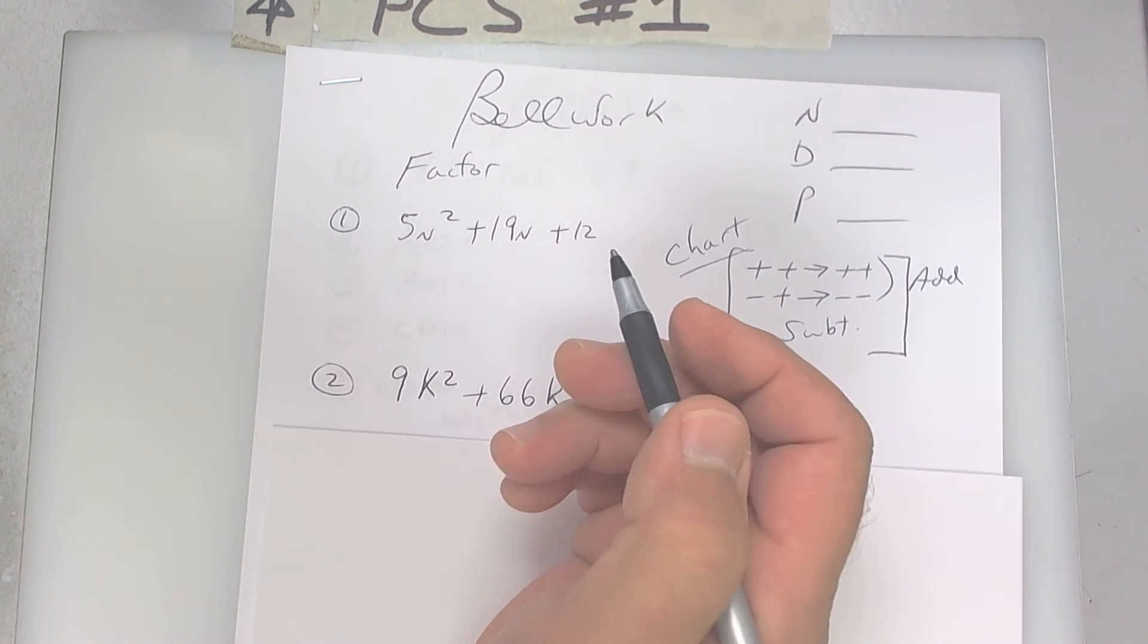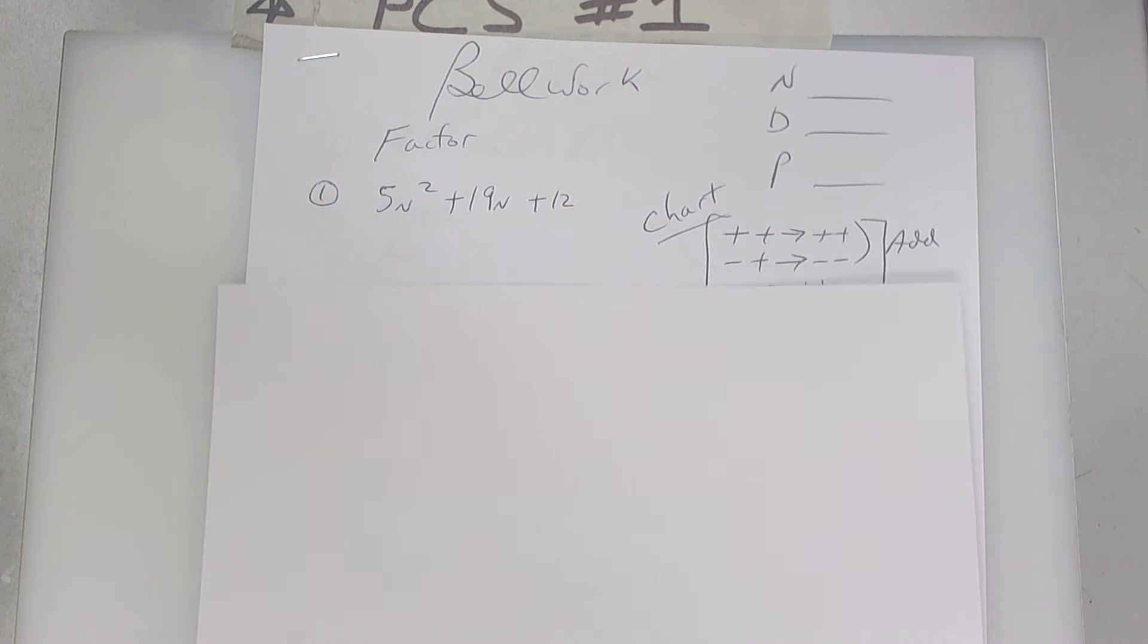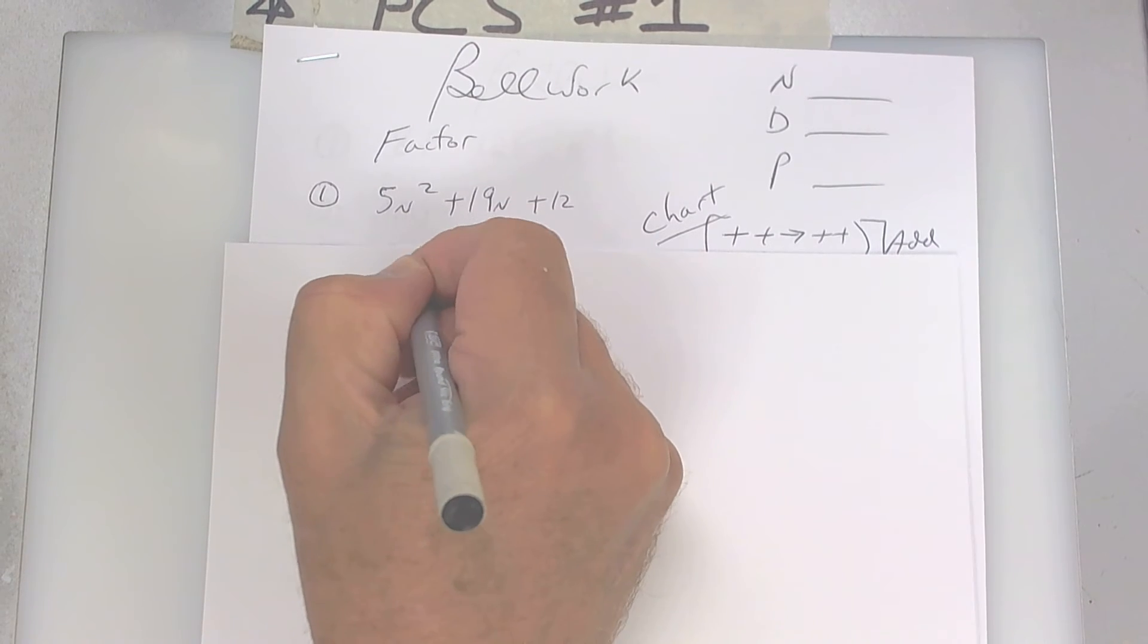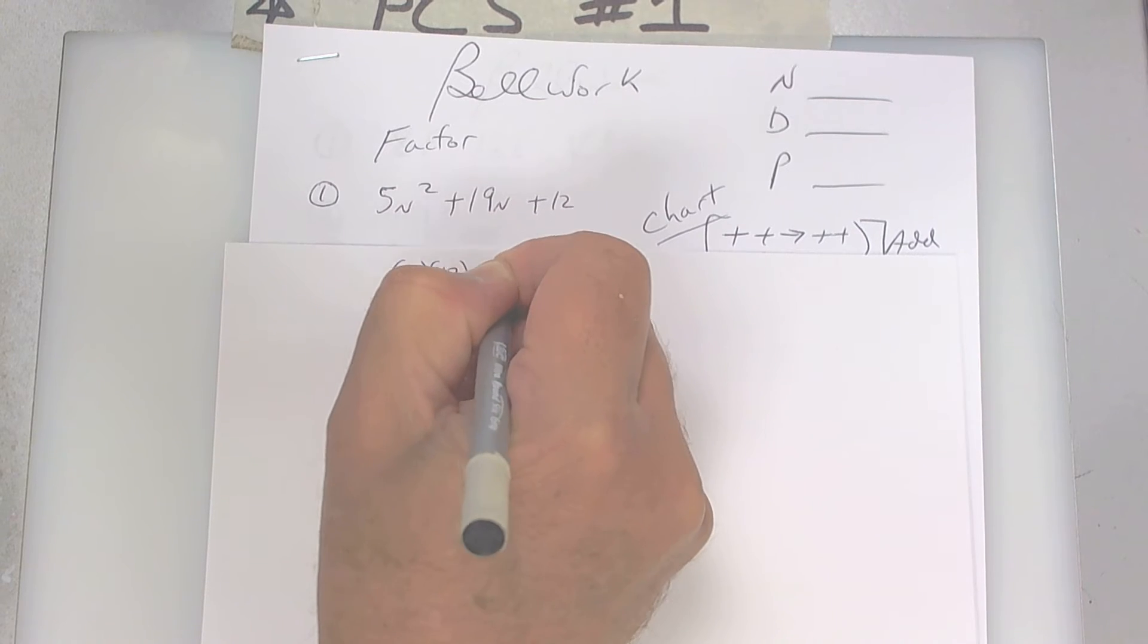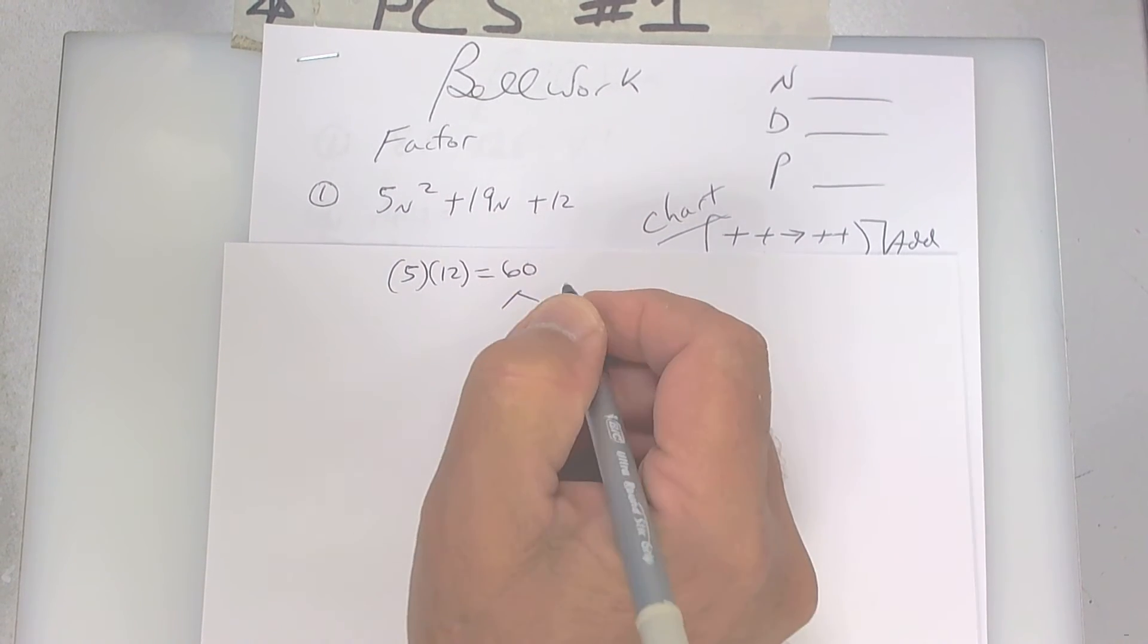All right, so let's take a look. We got two pluses so we're going to be adding. What you're going to do here is multiply 5 times 12, so 5 times 12 is going to give you 60, and then you start breaking this up.